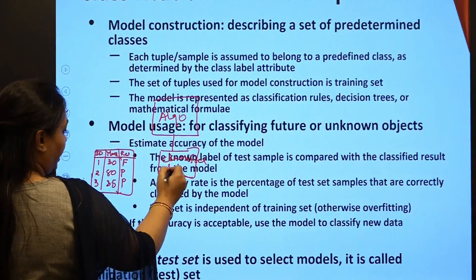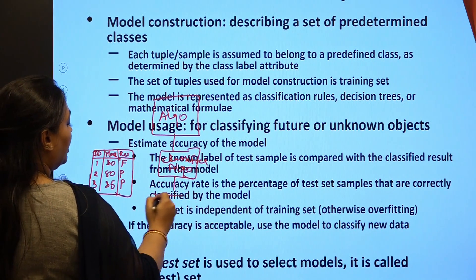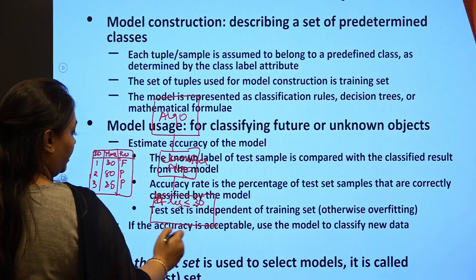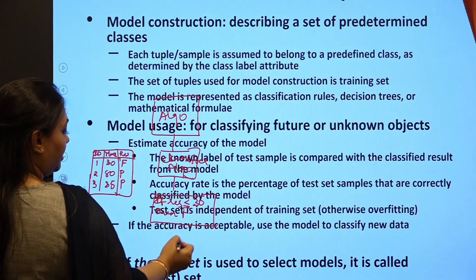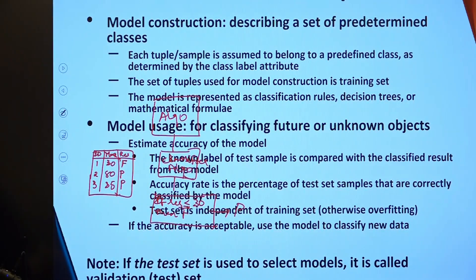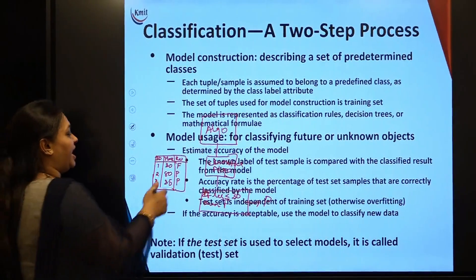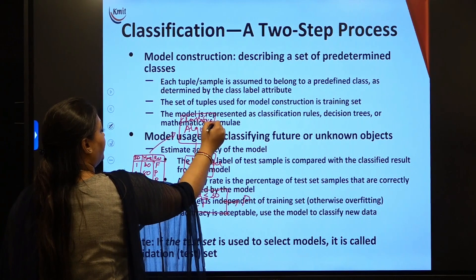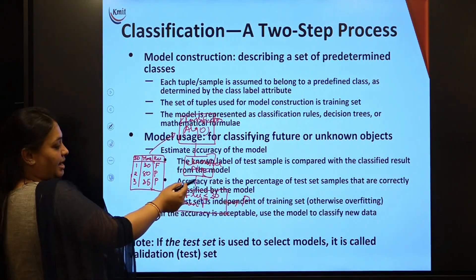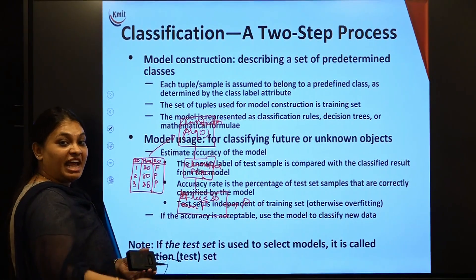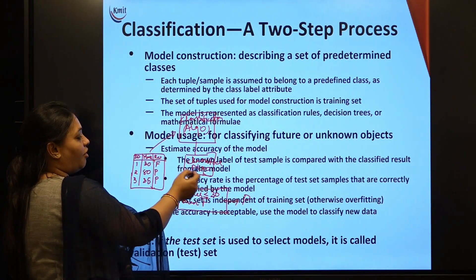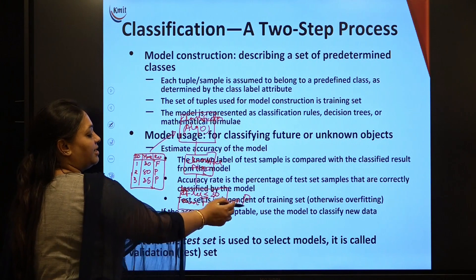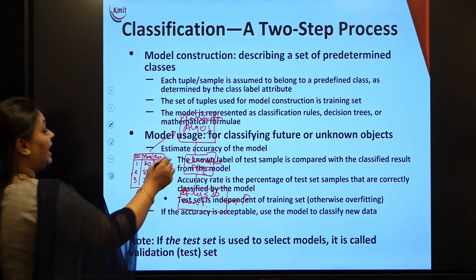From the training dataset I apply a classifier algorithm. The classifier algorithm could be a decision tree, Naive Bayes, SVM, regression — any of these algorithms. I then write the condition: if result is less than or equal to 30 then fail, otherwise pass.